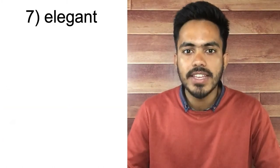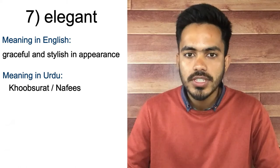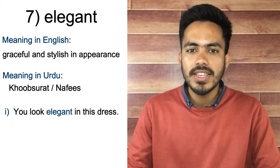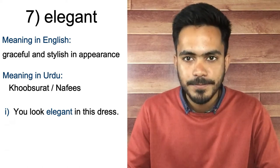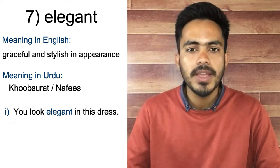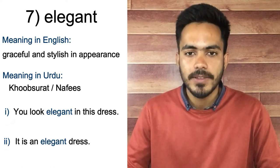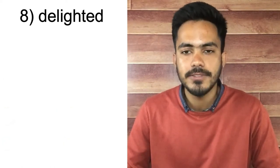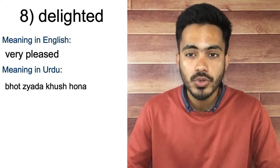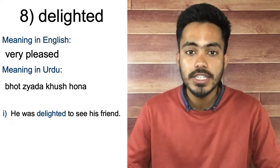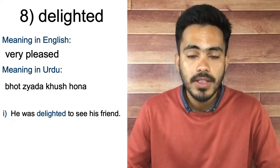On number seven we have 'elegant' — graceful and stylish in appearance. In Urdu it means خوبصورت یا نفیس. For example: 'You look elegant in this dress' — you look graceful and beautiful in this dress. If there is a very beautiful dress, we can also say 'It is an elegant dress.' On number eight we have 'delighted'. In English it means very pleased; in Urdu, بہت زیادہ خوش. For example: 'He was delighted to see his friend.'